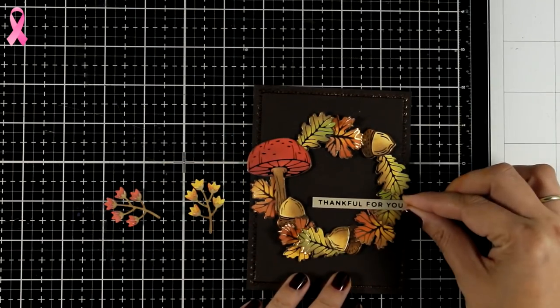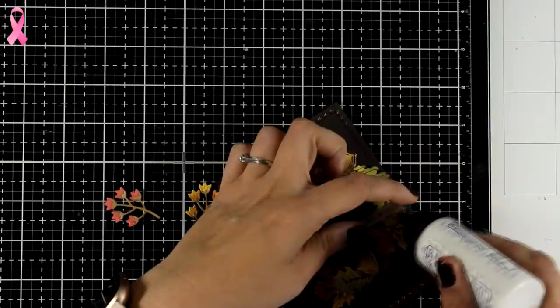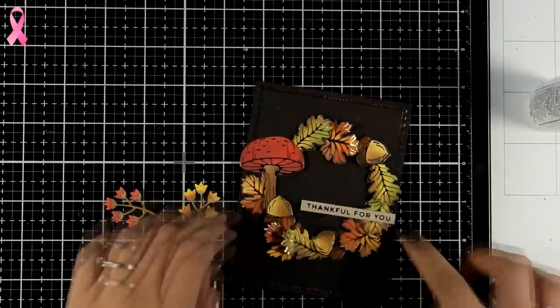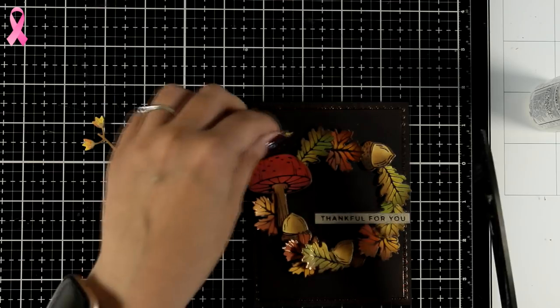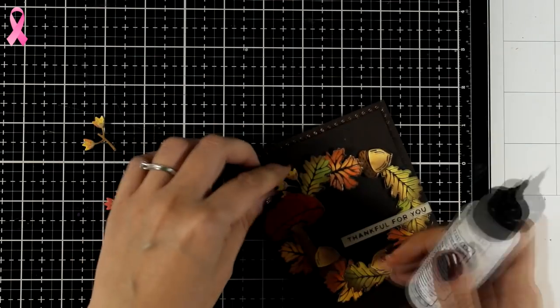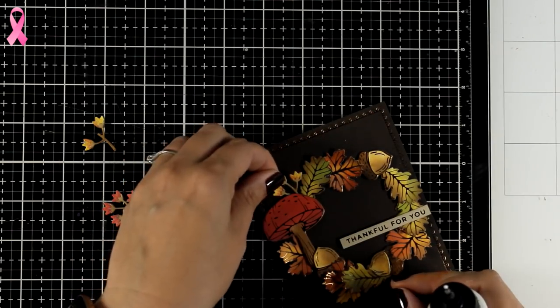For the sentiment I went with the one from the kit and I did foil it one more time on craft cardstock this time, because I felt that the brown one wasn't standing out as much as I wanted to on top of the same colored cardstock as my background.